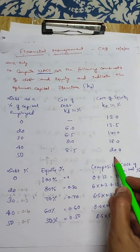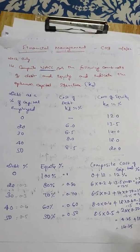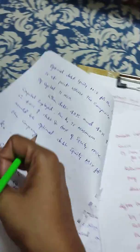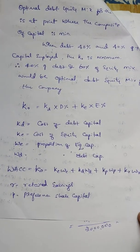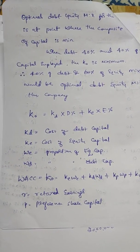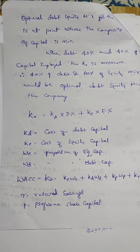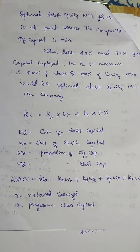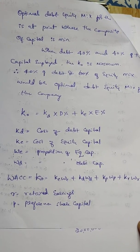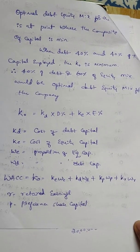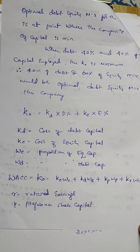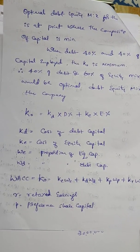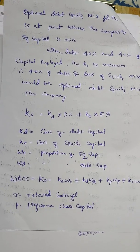From this question we need to find out the WACC. First, let's look at the formula. The overall cost of capital K0 is equal to KD into D percentage plus KE into E percentage. If preference share capital is included, add KP into WP, and for retained earnings add KR into proportion of retained earnings.